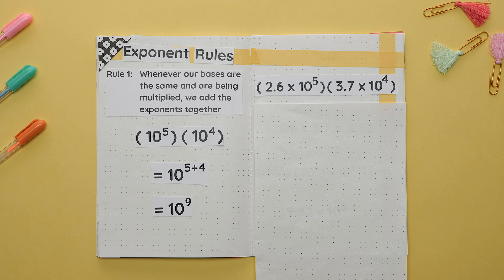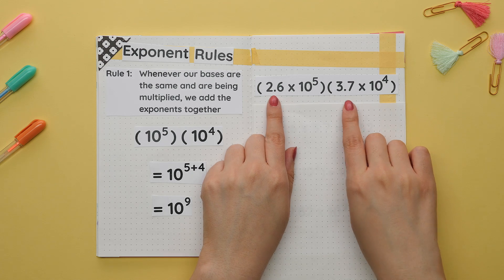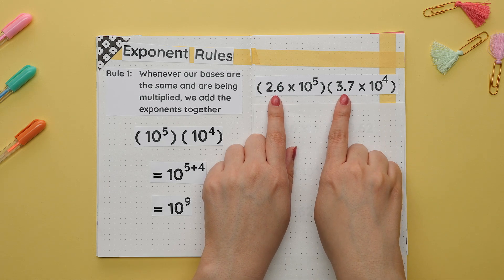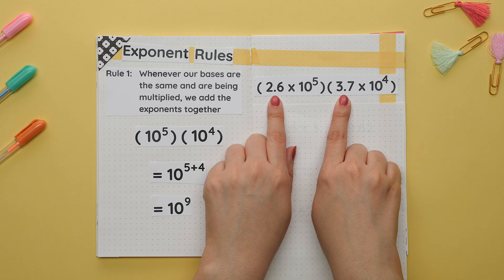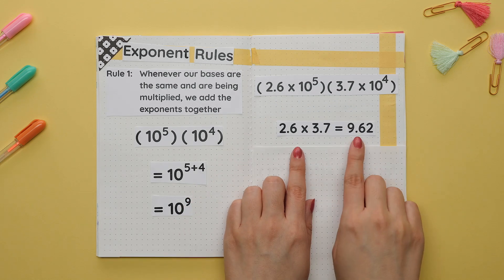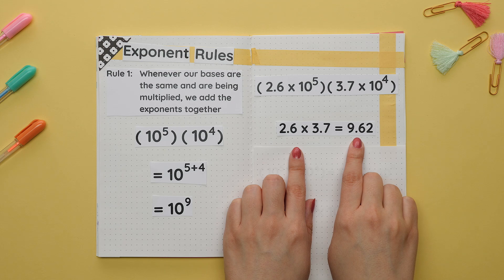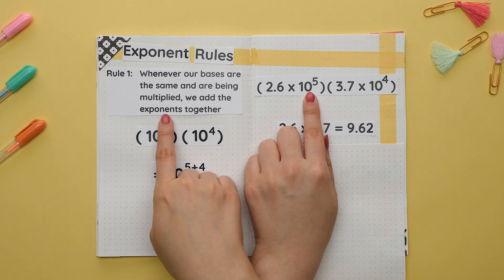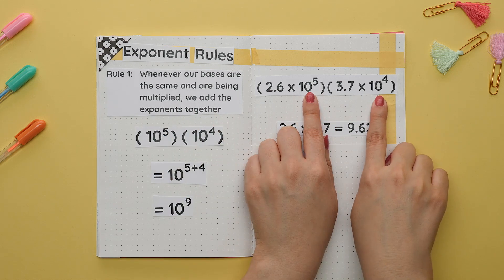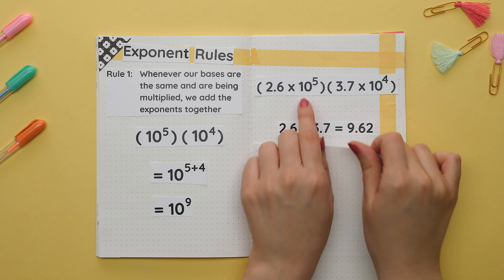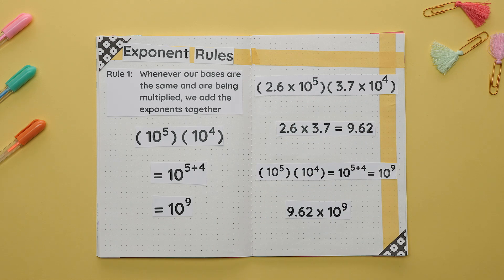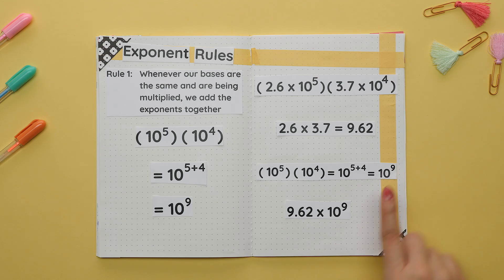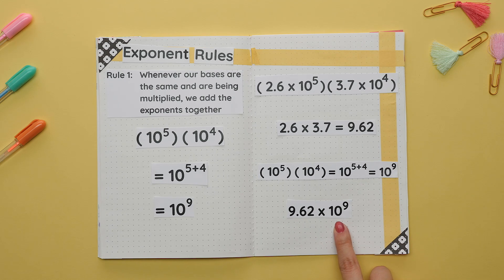Let's apply these rules to numbers in scientific notation. When multiplying two numbers in scientific notation, we first multiply the coefficients together. In this example we multiply 2.6 times 3.7 to get 9.62. Now that we've multiplied the coefficients, we move on to the bases. Our first exponent rule applies here because we have the same bases of 10 being multiplied, so we add the exponents together. Putting this together we get 9.62 times 10 to the 9th power.